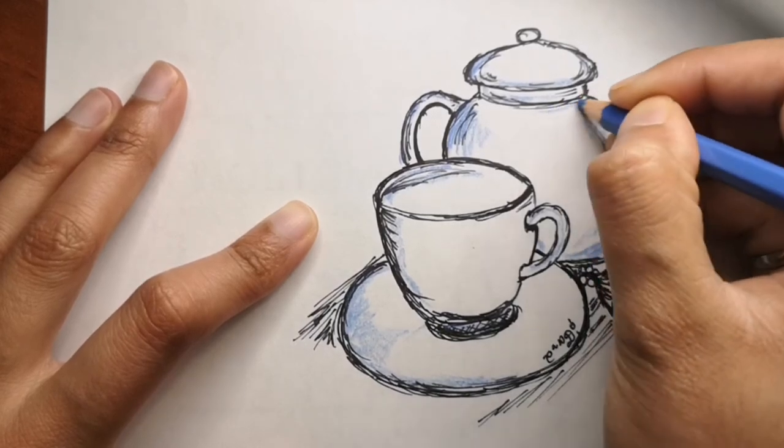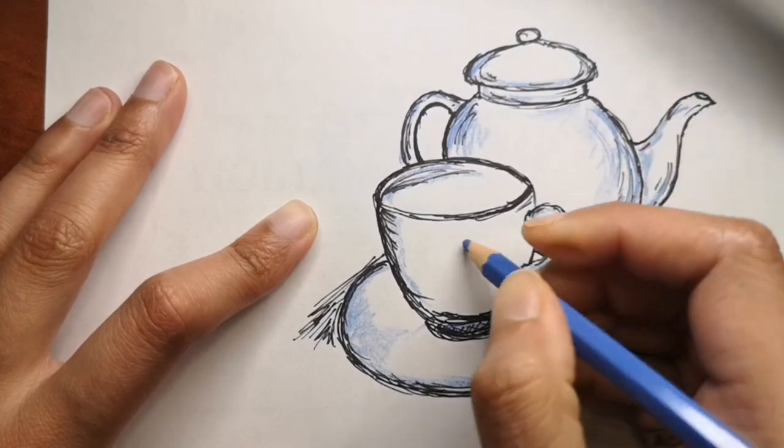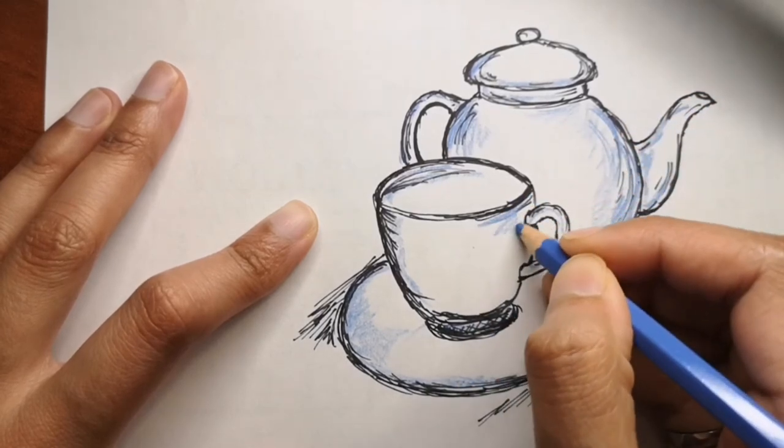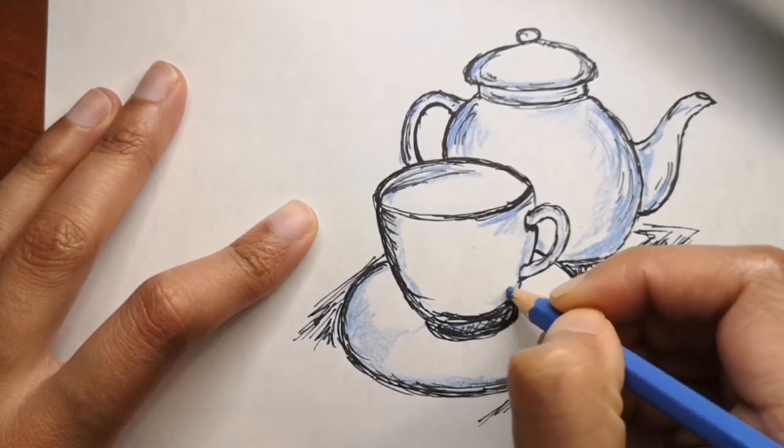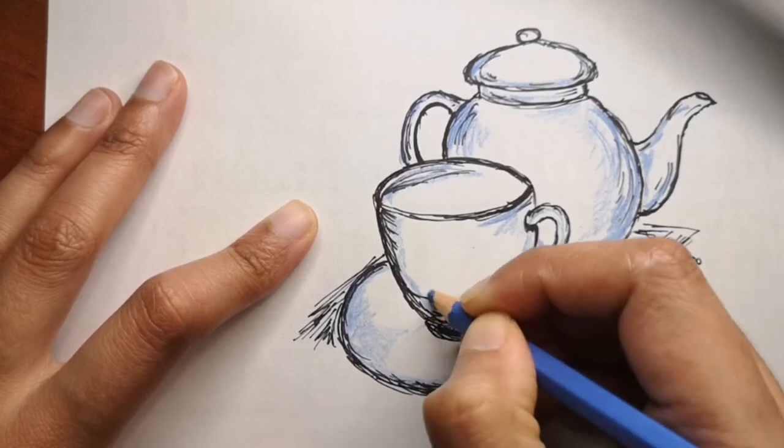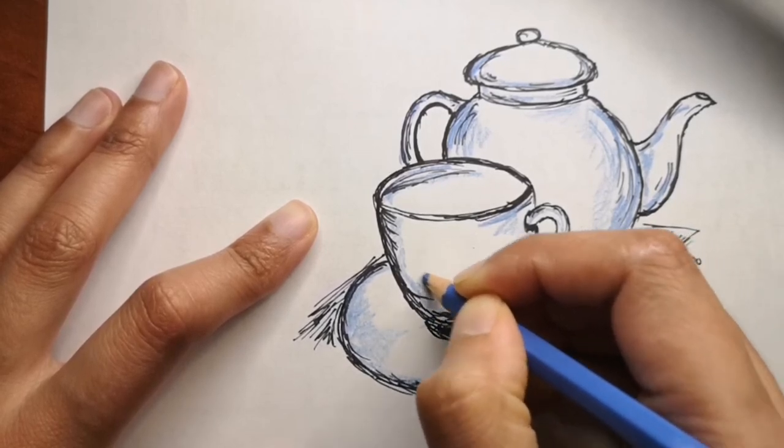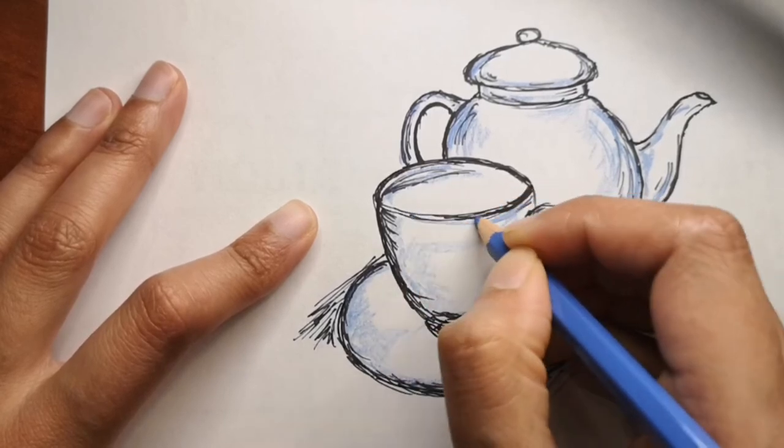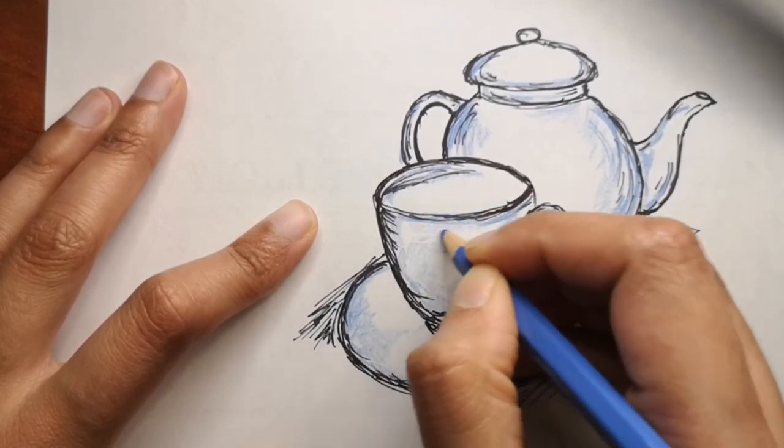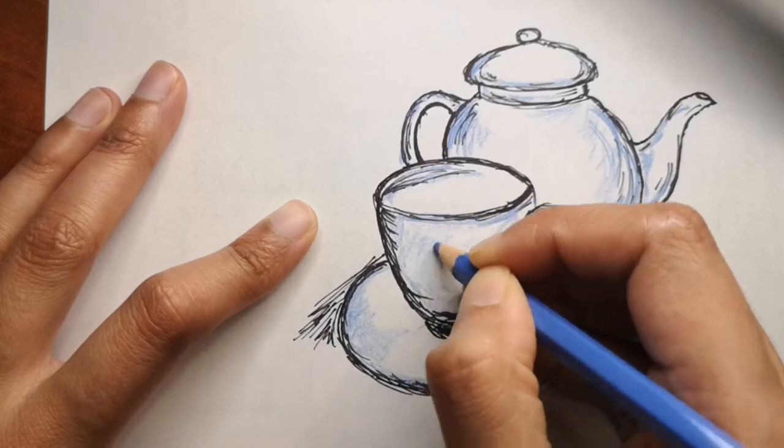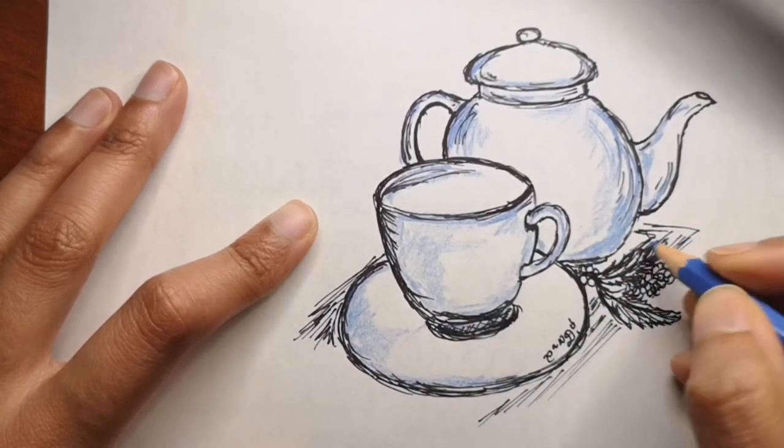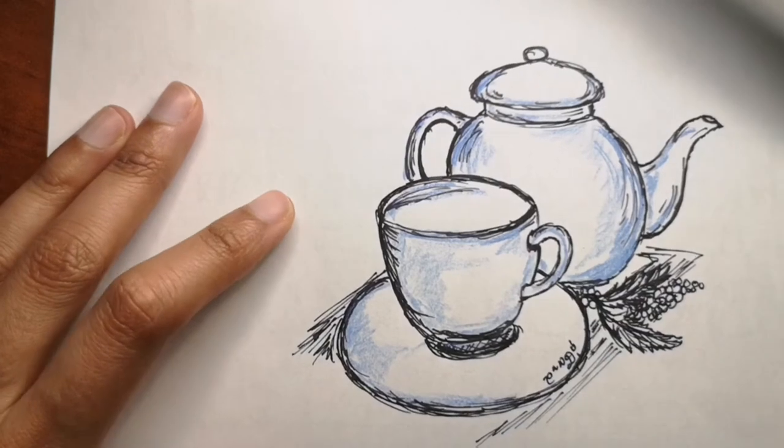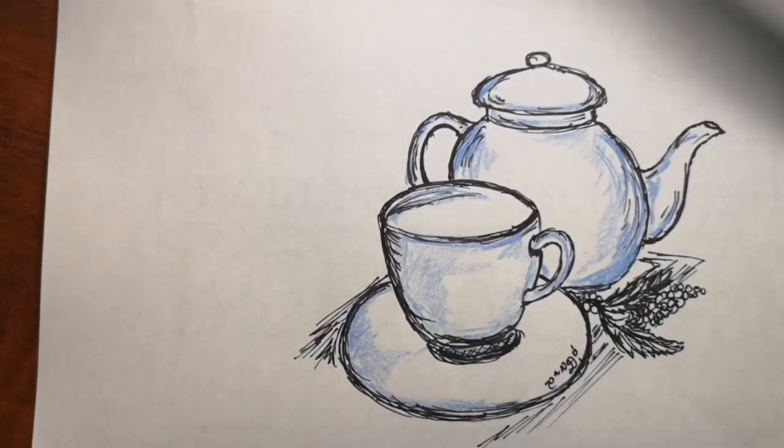But really, again, if you want to put some patterns onto the teacup and the teapot, you can add some flowers or some modern patterns like dots, polka dots, triangles, or lines—whatever you want. It's up to you how detailed you want to go. I just colored it blue.